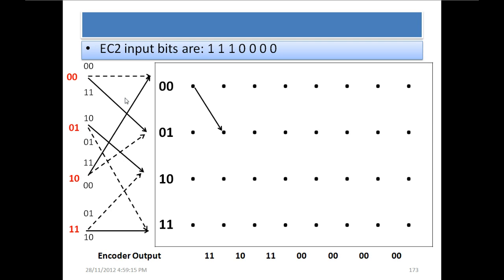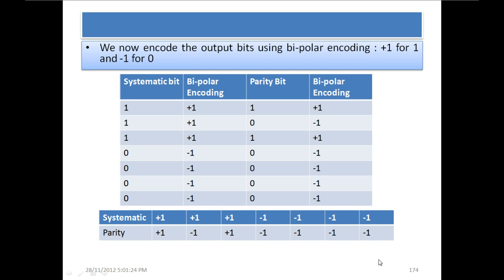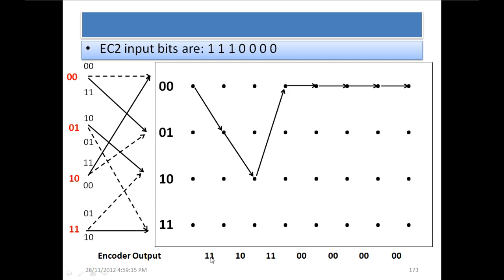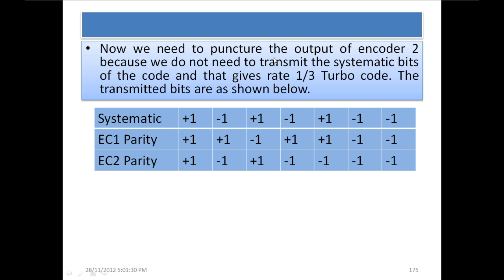Now we start encoding in the same way. The encoding method is very similar. The output we get is: 1, 1, 1, 0, 1, 1, 0, 0, 0, 0, 0, 0, 0, 0, 0. We again apply bipolar encoding to these output bits. This confirms it is also systematic, as the systematic portion of the output matches the interleaved input bits. We need to puncture the output of encoder 2 because we do not need to transmit its systematic bits, and that gives a rate 1/3 turbo code.